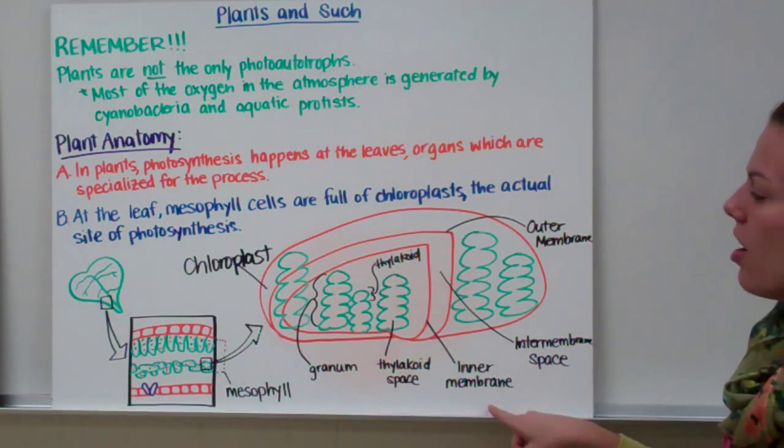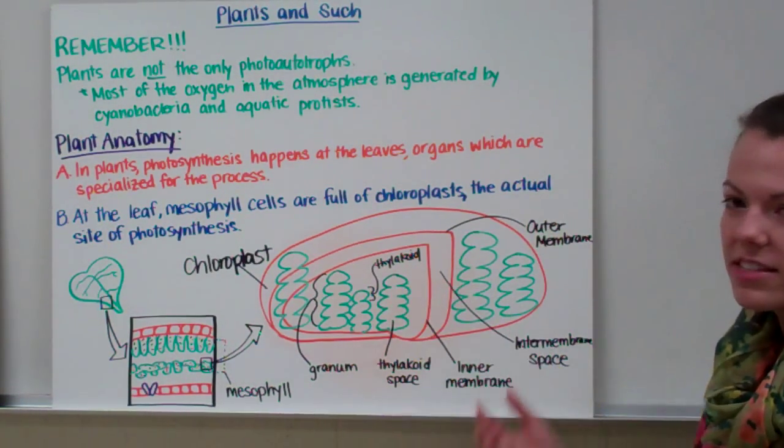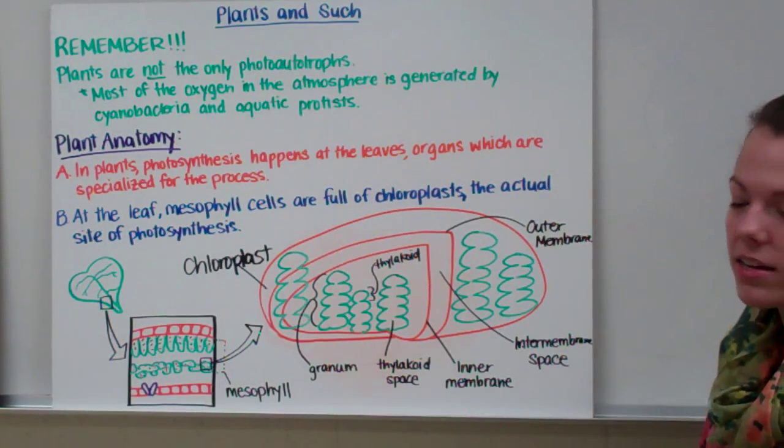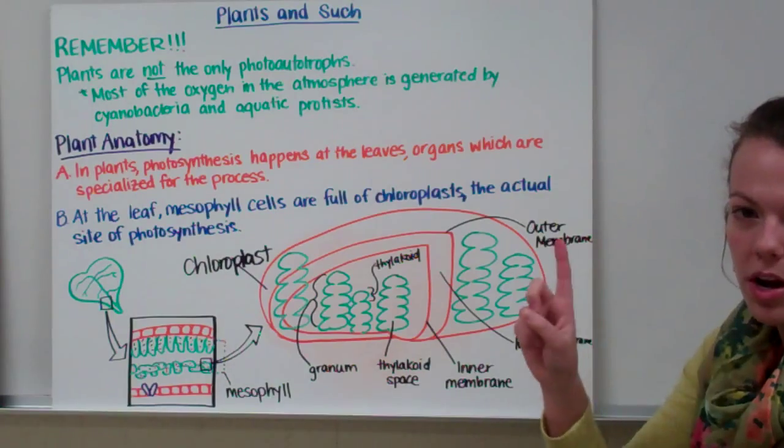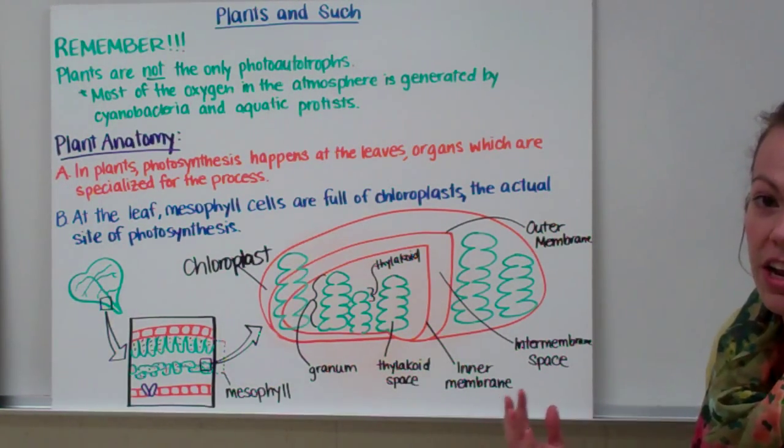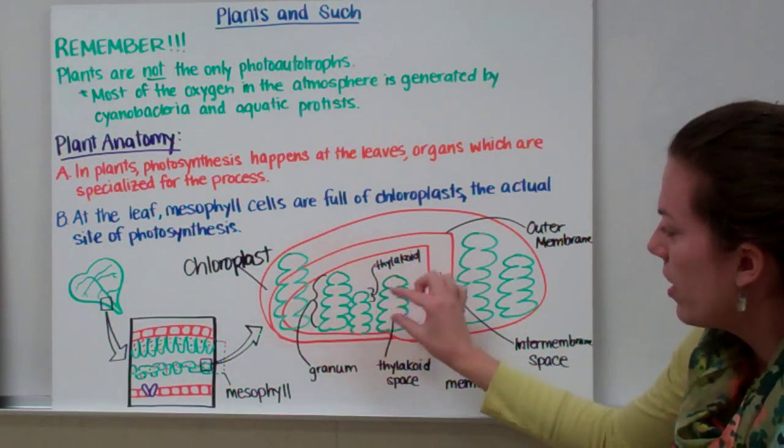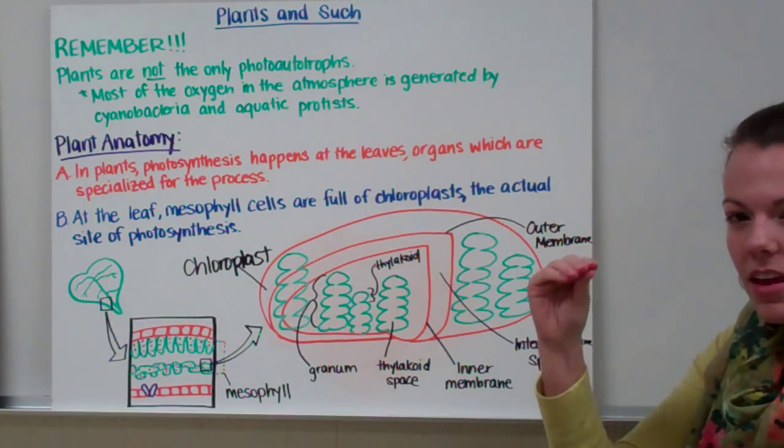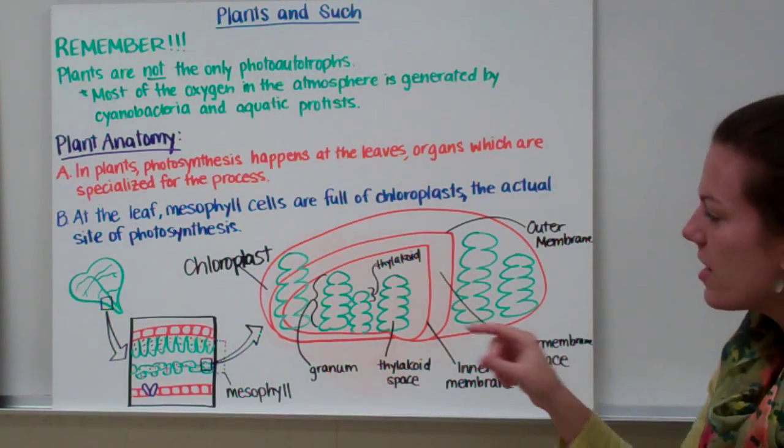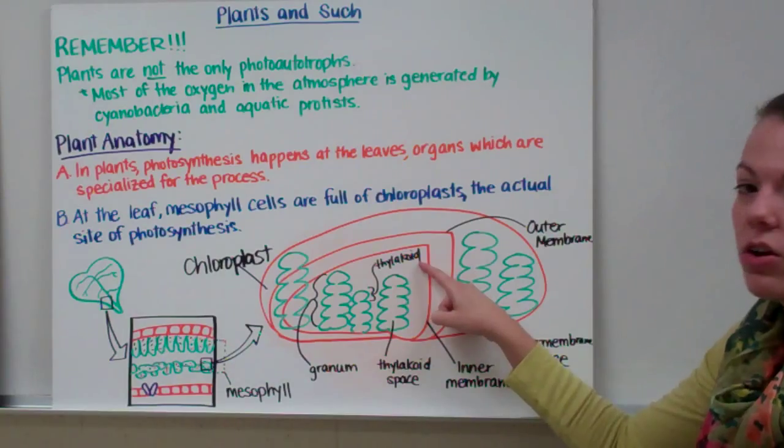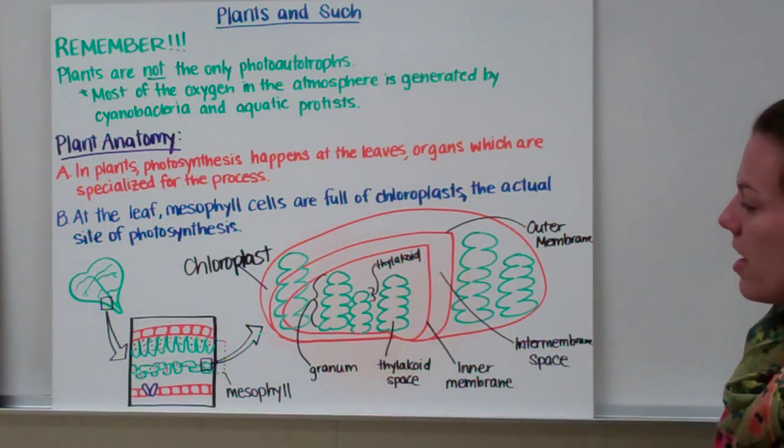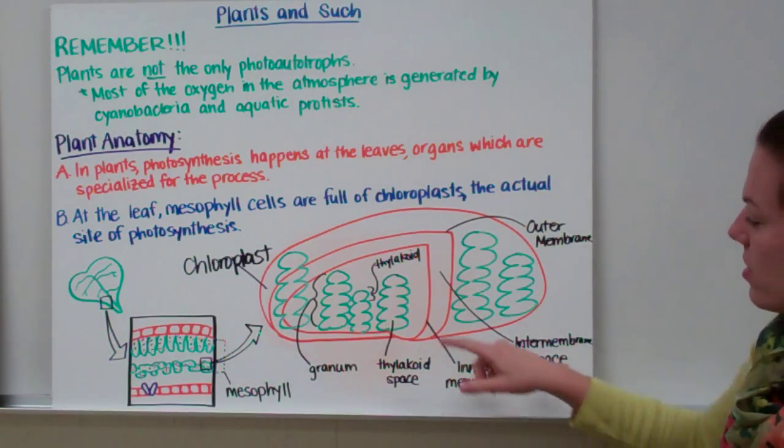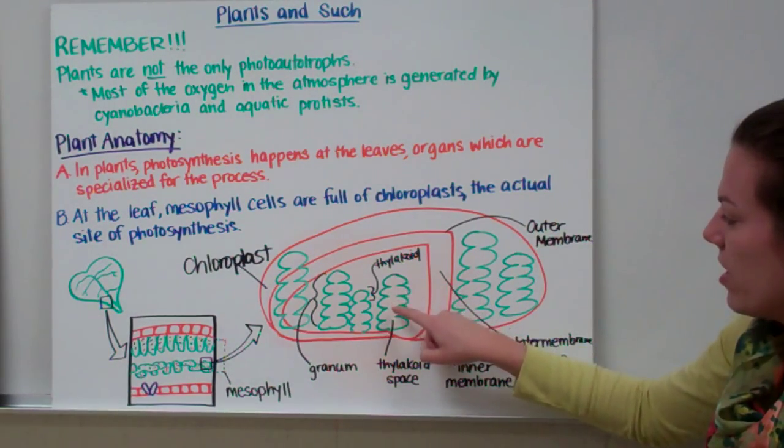Now inside of the inner membrane are these stacks. These stacks, they look kind of like stacks of coins or stacks of pancakes. These stacks are called a granum. One is a granum. More than one is called grana. So each stack is called a granum, and each individual pancake or each individual coin in the stack is called a thylakoid. Each little thing that's stacked up is called a thylakoid. Now inside of the thylakoid is a region called the thylakoid space.